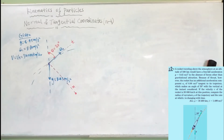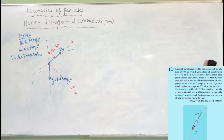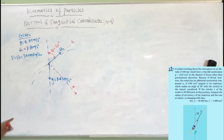To convert: 1 meter per second is equal to 3.6 km per hour, so 1 km per hour equals 1 over 3.6 meters per second. We apply this to convert V into meters per second.